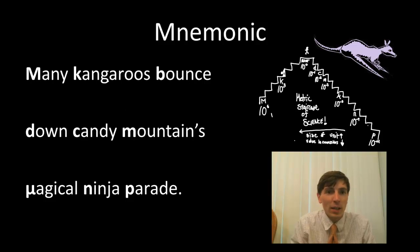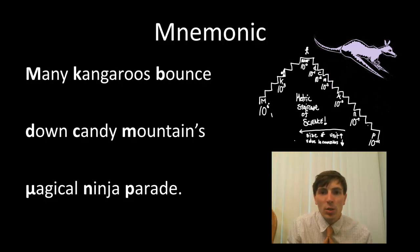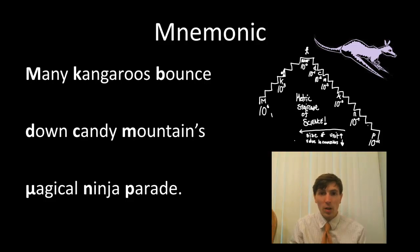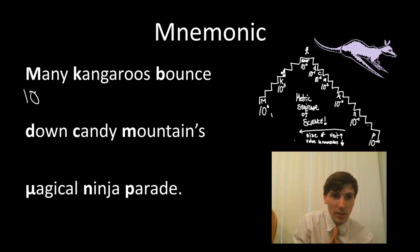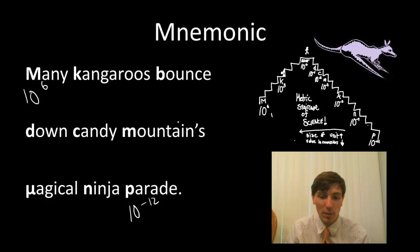I made up this mnemonic: 'Mini kangaroos bounce down, candy mounds, magical ninja parade.' This is just a way to remember the different prefixes — starting with mega, kilo, base, deci, centi, milli, micro, nano, and pico. There are all the different powers of ten, starting with the biggest — mega at 10 to the 6th — all the way down to the smallest — pico at 10 to the minus 12th. If you don't want to memorize the gigantic stair step, you can use this mnemonic.